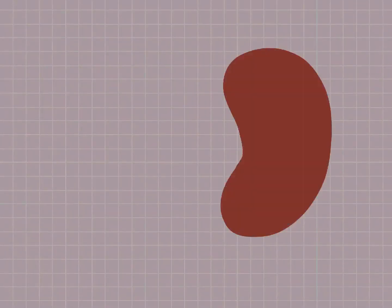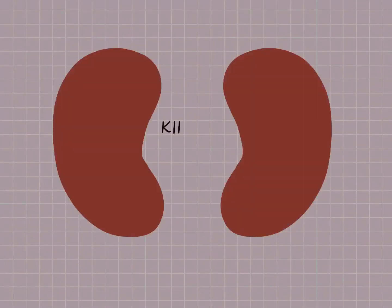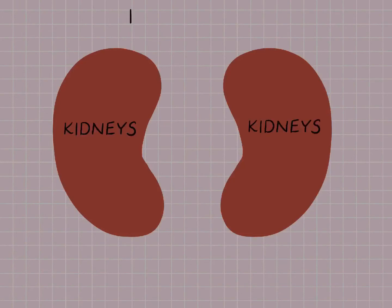So let's talk about the kidneys today. We'll start with the basic anatomy of the kidneys. In fact, the kidneys are part of a broader anatomical system in the body called the renal system.